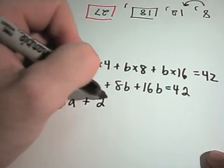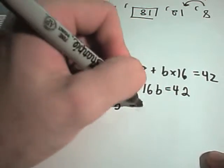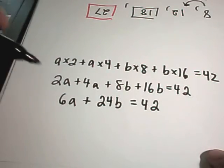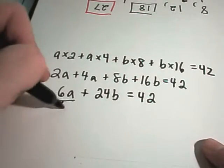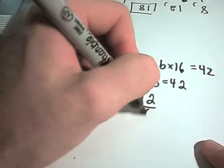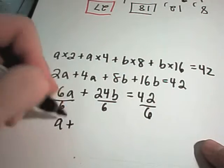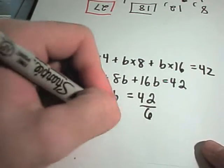But notice now I can divide both sides by 6. So, if I divide everything by 6, I'm going to get a plus 4b equals 7.